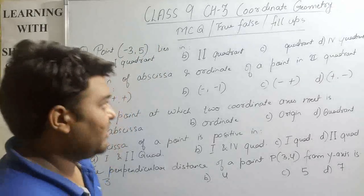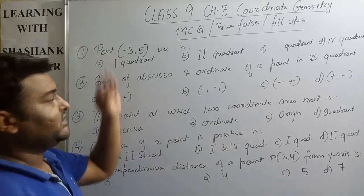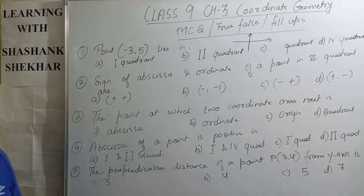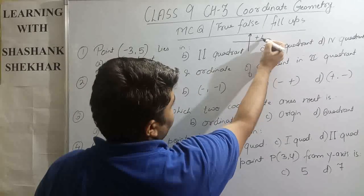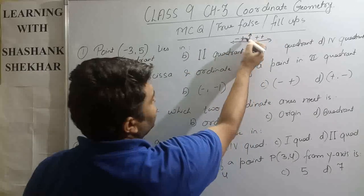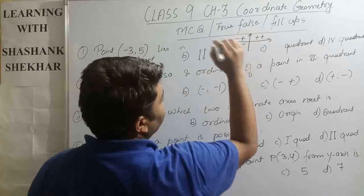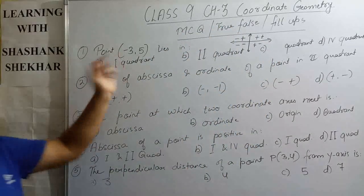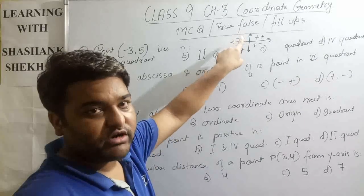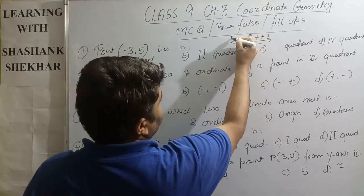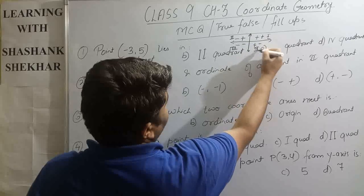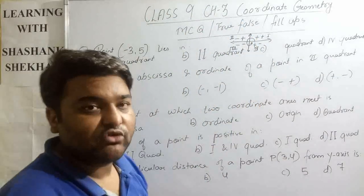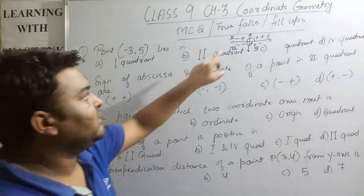Question number one: point (-3, 5) lies in which quadrant? We have to tell in which quadrant the point (-3, 5) lies. Here x is minus 3 and y is plus 5. As you move from the positive x-axis in an anti-clockwise direction, you can know the sign conventions of all four quadrants. So minus 3, 5 will lie in the second quadrant.